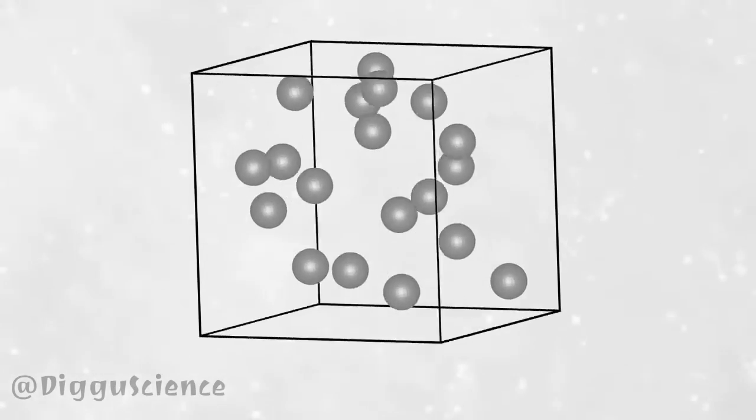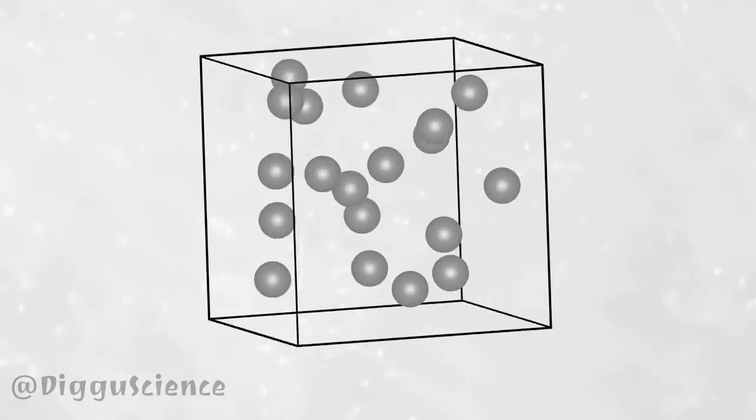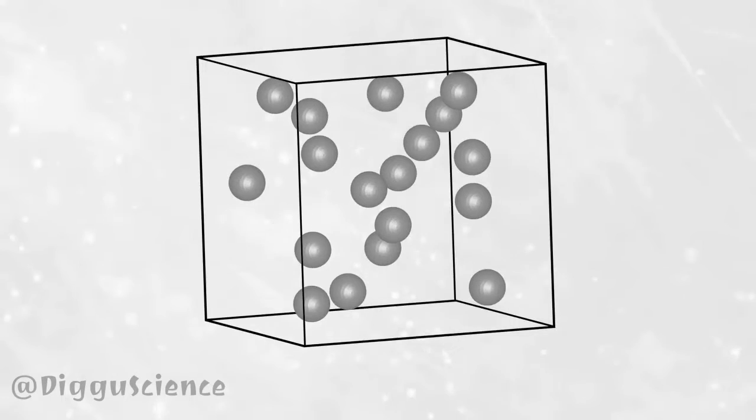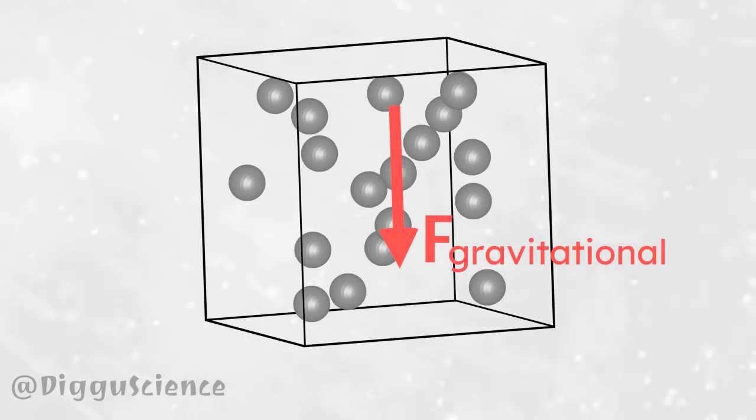Each of these particles has mass. If this fluid parcel is in a gravitational field area, each particle will experience a vertical downward gravitational force. All of these forces have a resultant force. We often call this resultant force as the gravitational force.